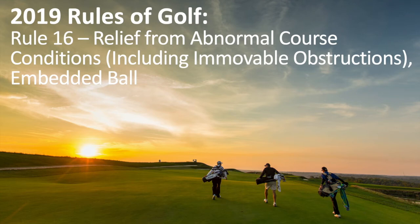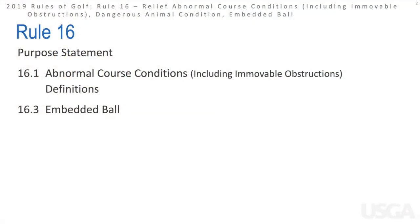In this video we'll be covering Rule 16, which will go through the relief options for abnormal course conditions. In the 2019 rules of golf, this now includes immovable obstructions. We'll also go through options for relief when a golf ball is embedded. We'll go through the purpose statement, talk about abnormal course conditions, go through a few definitions, and then wrap things up with embedded ball.